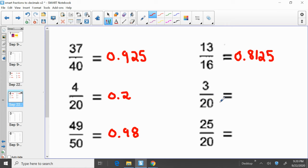Three twentieths, three over twenty equals zero point one five. So three over twenty equals zero point one five. Three divided by twenty.